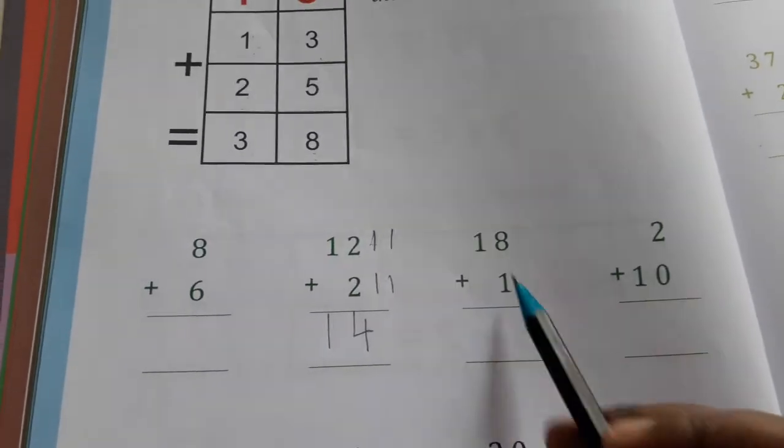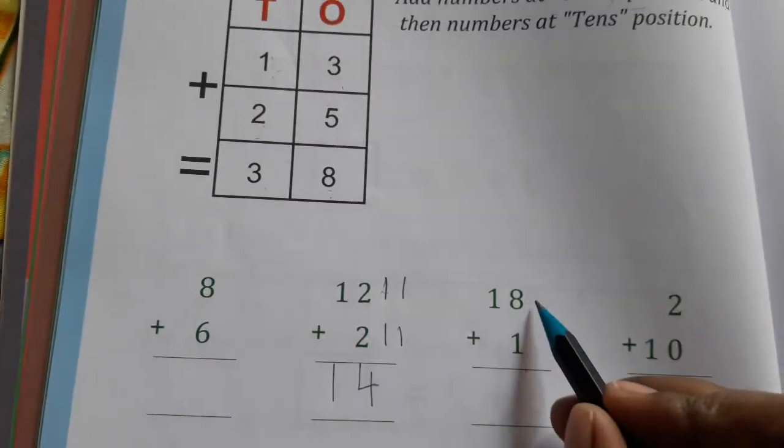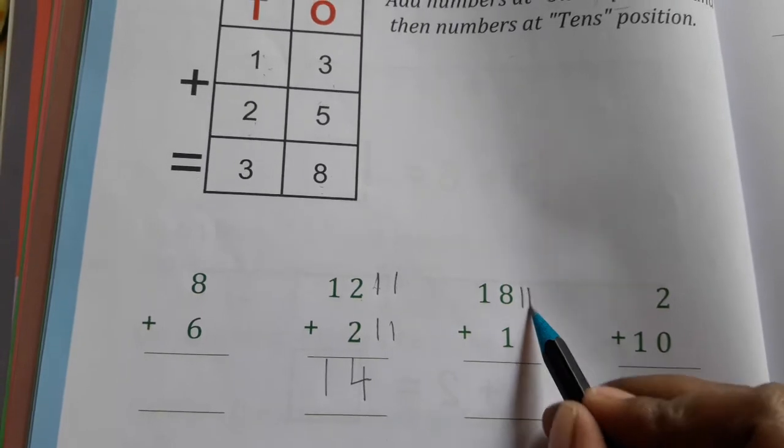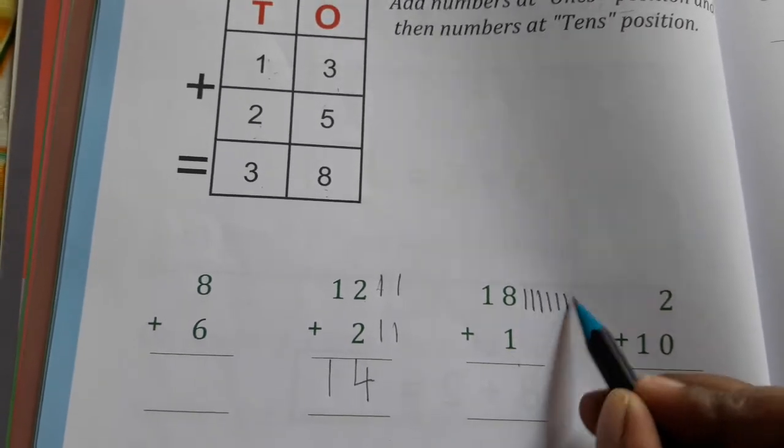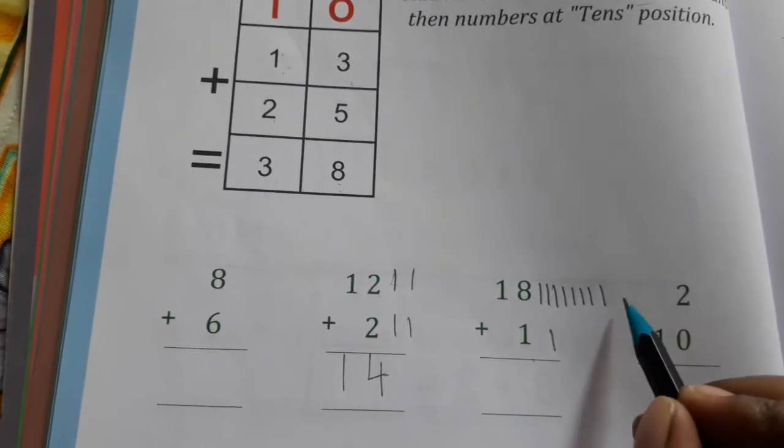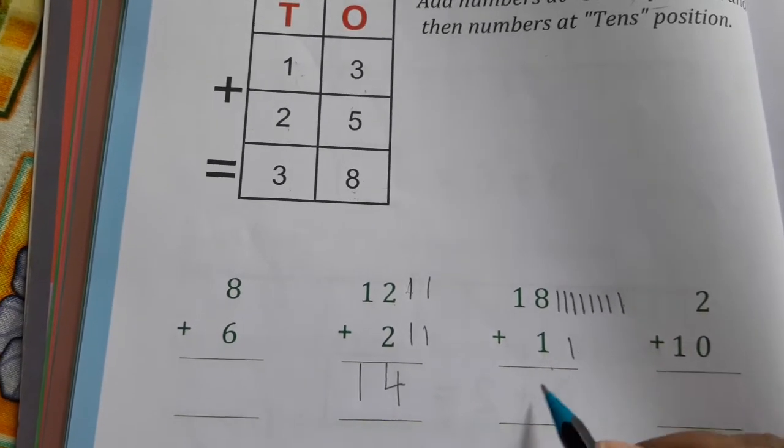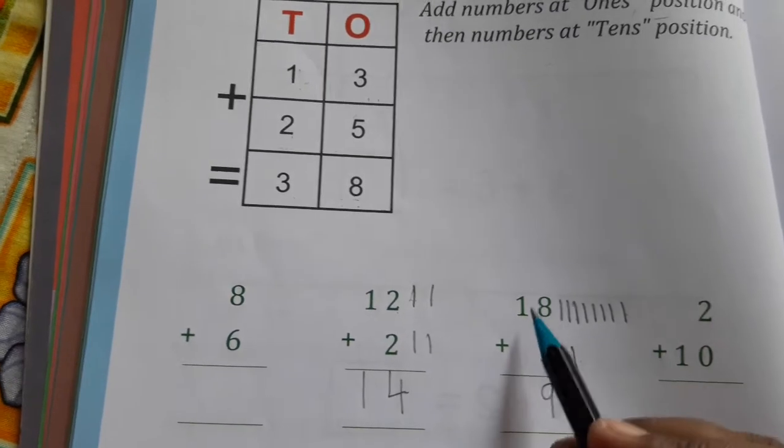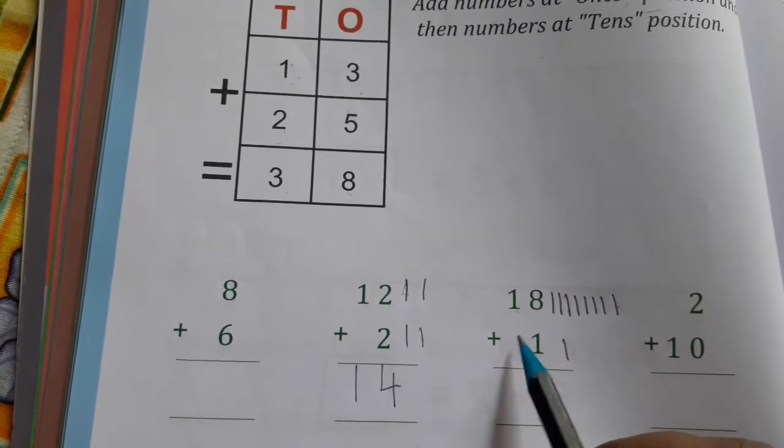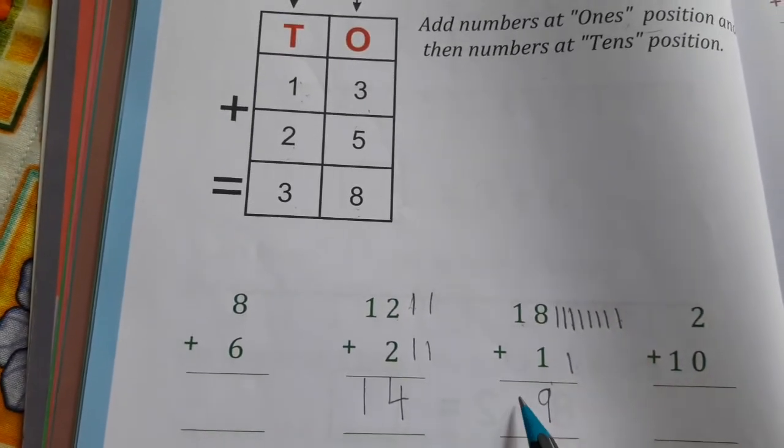Next, 8 and 1. Counting: 1, 2, 3, 4, 5, 6, 7, 8, 9. Right here 9 and 1. Here, because there is no number here, so 1 has no number, so it is 1 as it is.